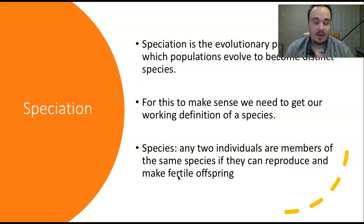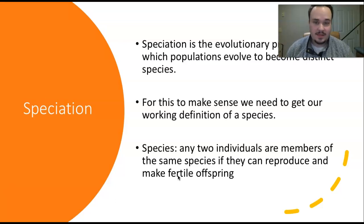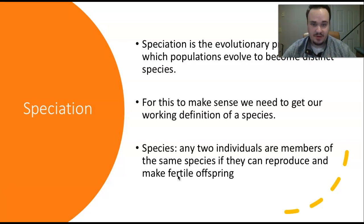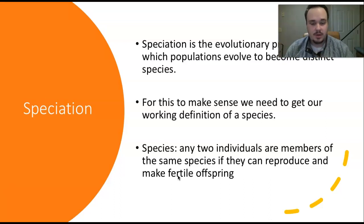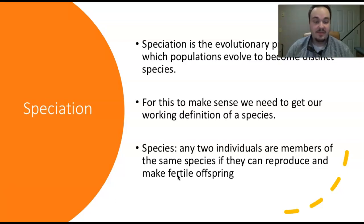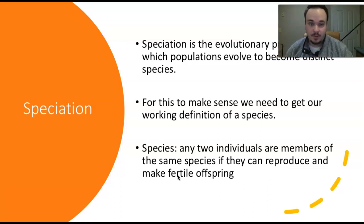Speciation is the evolutionary process by which populations evolve to become distinct species — basically how we get the species we have today, what they might have looked like previously, and what their ancestors might have looked like. For this to make sense, we need a working definition of a species, which is actually harder than you might think, because even biologists argue over it. For this class we'll use the biological species concept: two individuals are members of the same species if they can reproduce and make fertile offspring — the offspring themselves must also be able to reproduce.